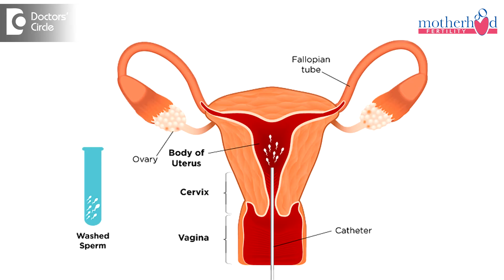IUI is the intrauterine insemination of sperms. This procedure is usually done when the sperm counts or the motility of sperms is on the lower end. In this procedure, ovulation induction is done to release the egg from the ovary, and around the time of the release of the egg we perform the IUI.